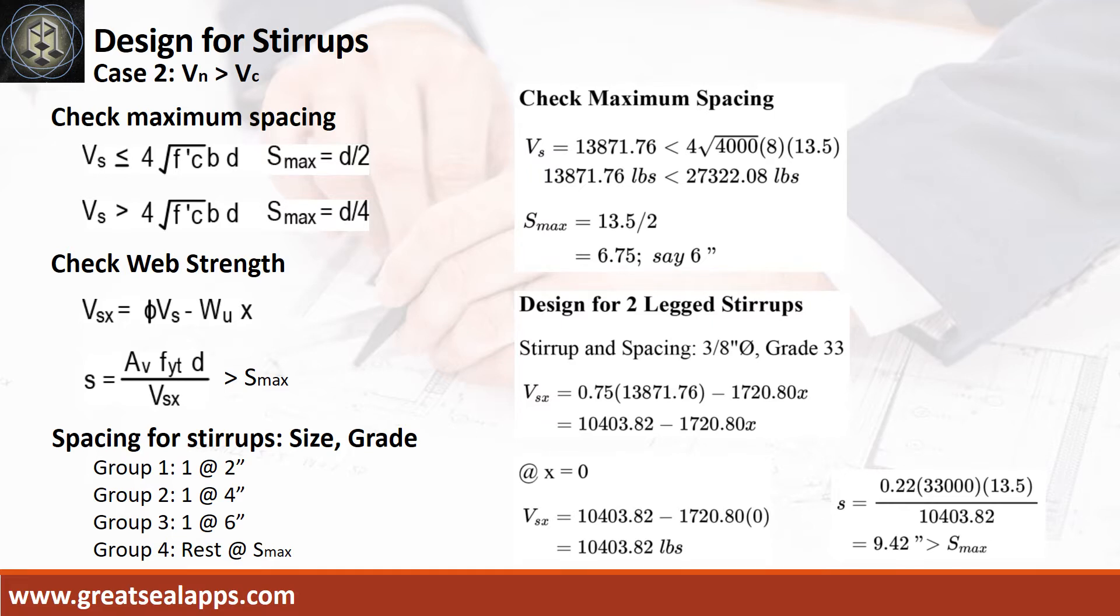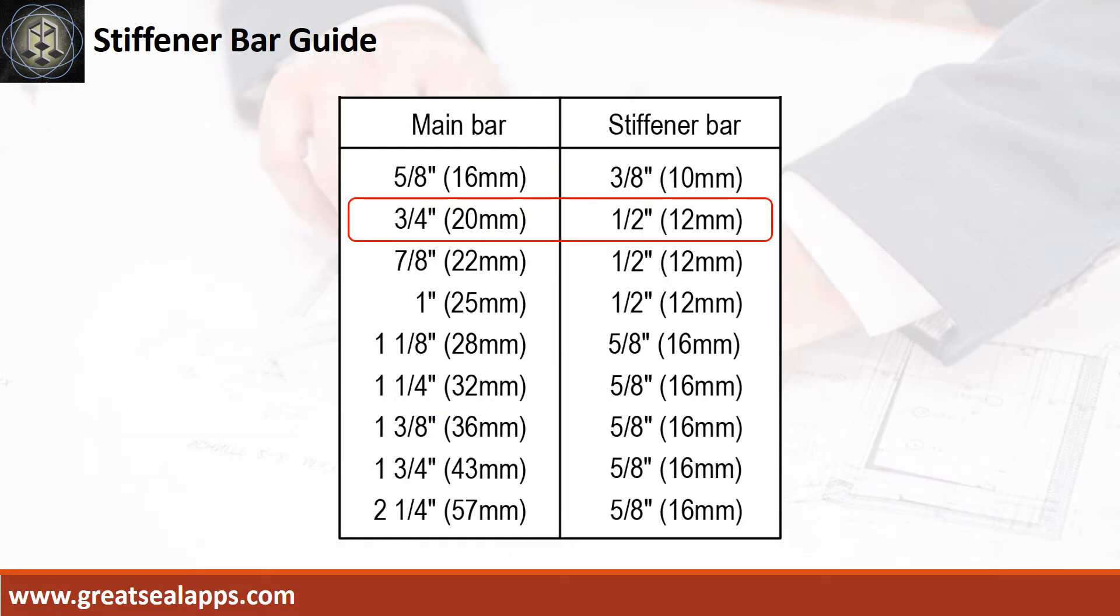The stirrup spacing are as follows: 1 at 2 inches, 1 at 4 inches, rest at 6 inches. For 3/4 inch diameter main bars, use 1.5 inch diameter stiffener bars.